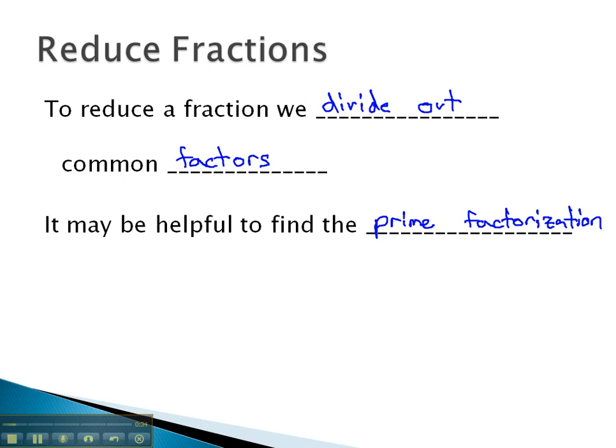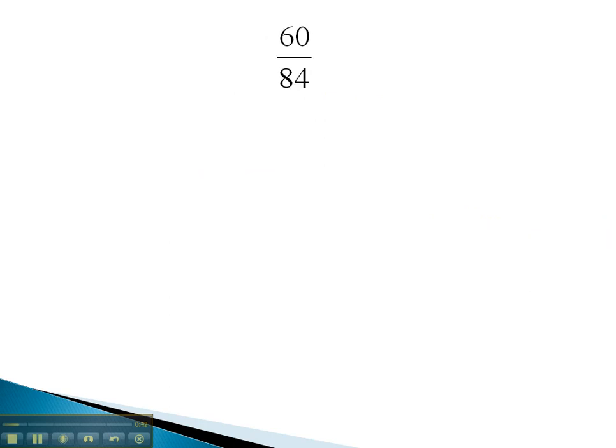So let's see if we can find some prime factorizations of a fraction and then divide out the common factors. Let's consider the fraction 60 over 84. First, we need the prime factorization of 60 and 84, which we can find by dividing out prime numbers.